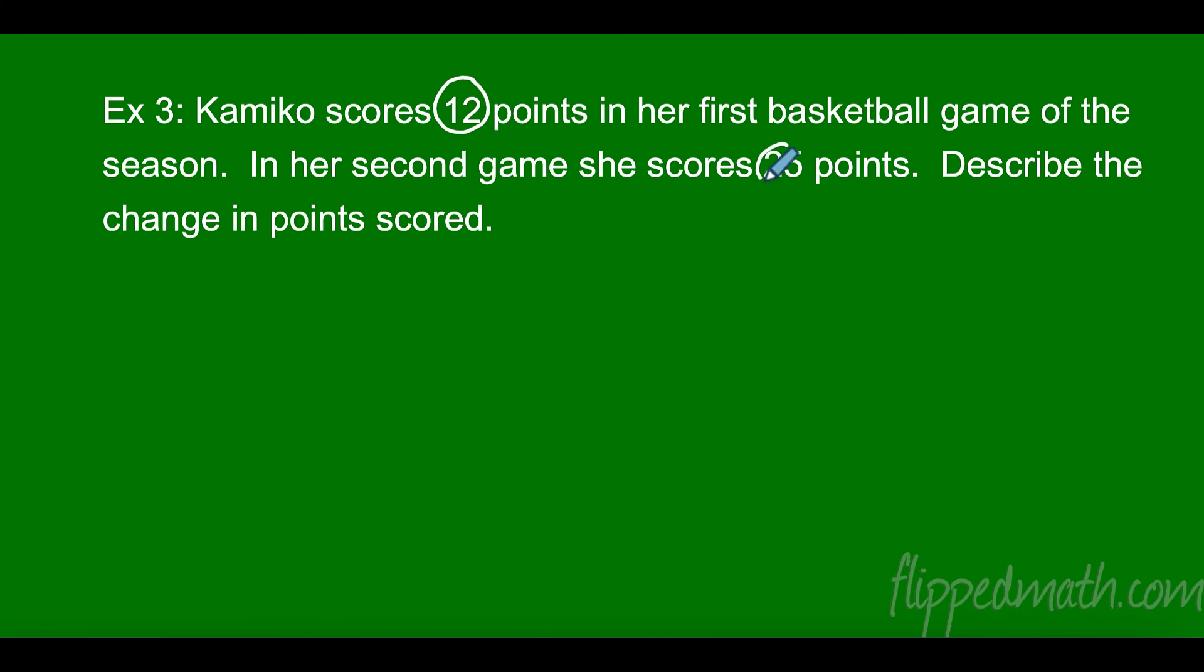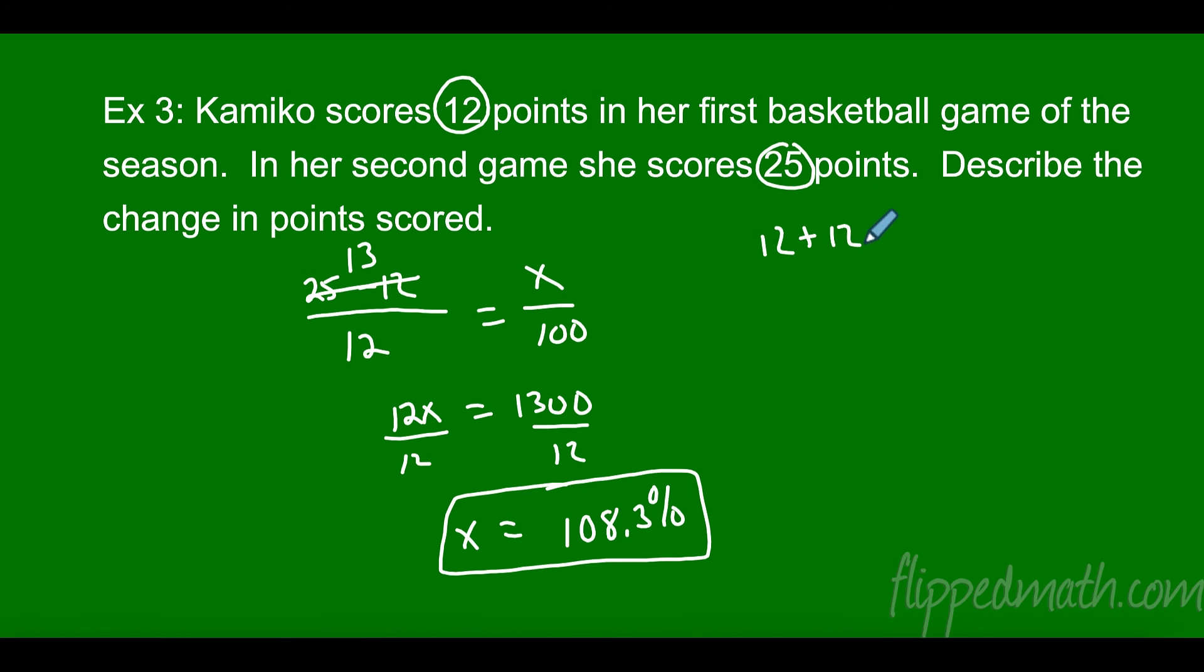Alright, Comeko scores 12 points in her first basketball game. In her second game she scores 25. So this is her original, this is her new. Okay, so let's see what we got. Our change would be 25 minus 12 over her original which is 12, and then we don't know the percent change over 100. Here we go. So I have 12x equals, 25 minus 12 is 13, so that's 1300. Divide both sides by 12 and x equals one hundred and eight point three percent. She increased her points by a whole hundred percent, so she got all 12 points, that's a hundred percent, and eight point three percent more. That's why she got the 25. That's an increase.